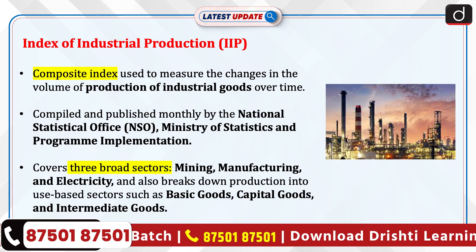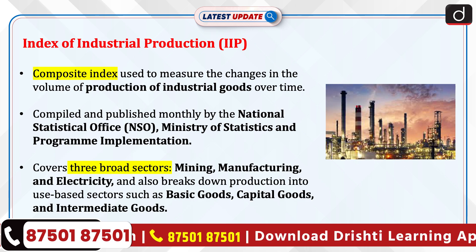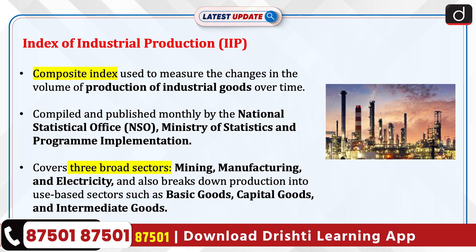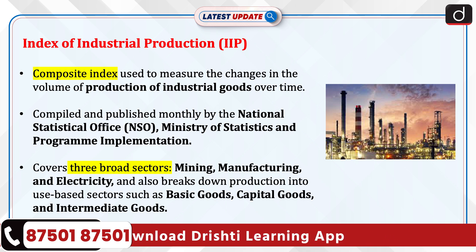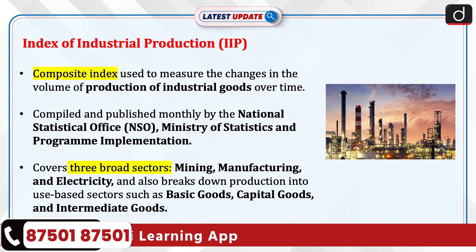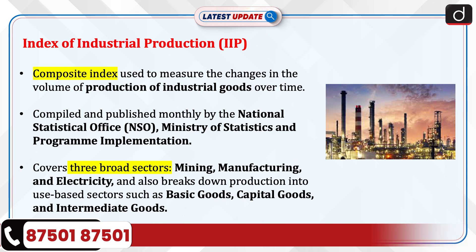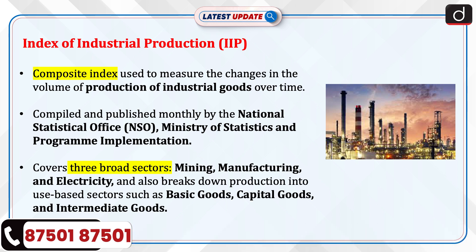Now let's discuss the Index of Industrial Production. It is a composite index used to measure the changes in the volume of production of industrial goods over time. It is compiled and published monthly by the National Statistical Office, Ministry of Statistics and Programme Implementation.